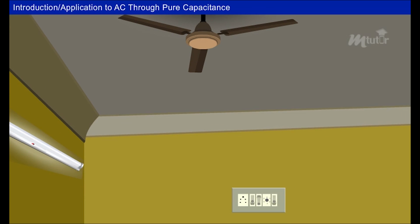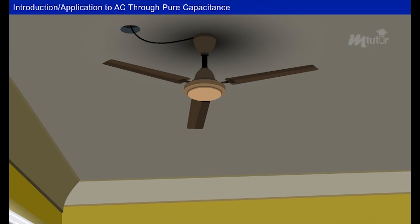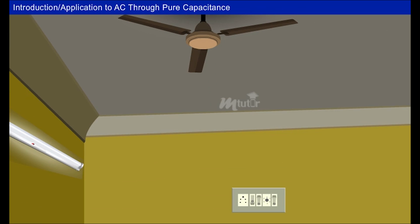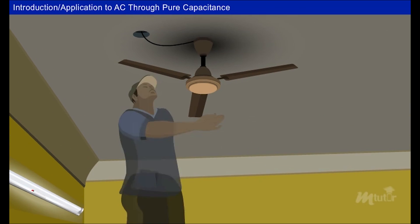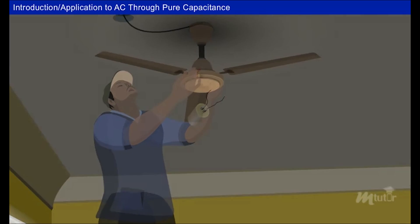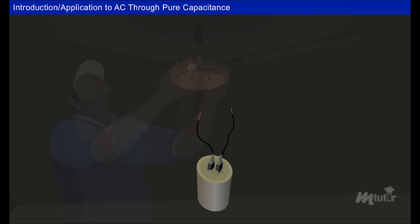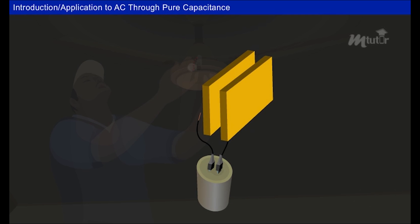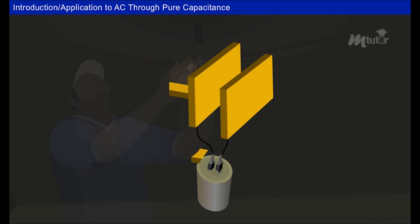You would have often come across this scenario in your home: sometimes even when there is power and the switch is on, still the ceiling fan would not run. Have you ever thought why this happens? One of the reasons would be failure of the capacitor in the fan.